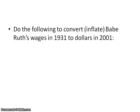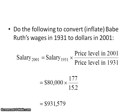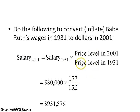Here's another example: convert Babe Ruth's wages in 1931 to dollars in 2001. You take the original wages and put that in the denominator, and the wages of the year you're converting to go in the numerator, then multiply by the salary at that original year. The salary in 1931 was $80,000, but when you look at the price index of when he was playing versus in 2001, you can see that converted to 2001 prices, he would be making almost a million dollars.